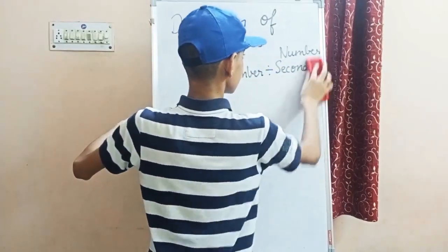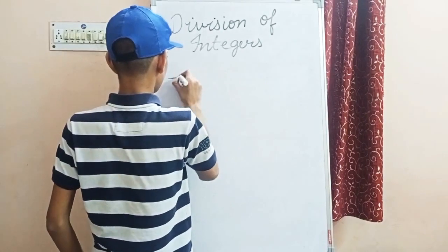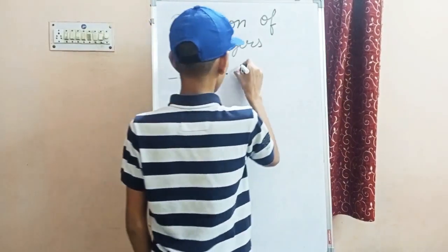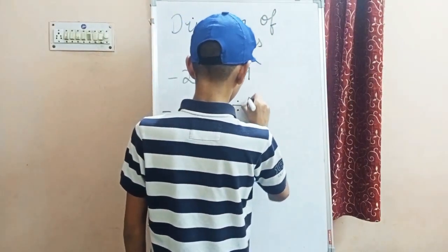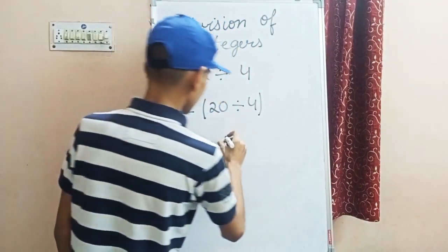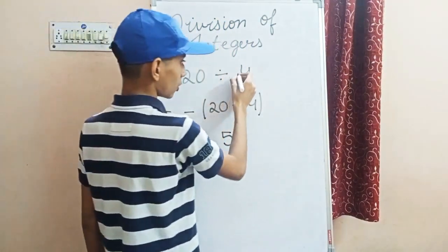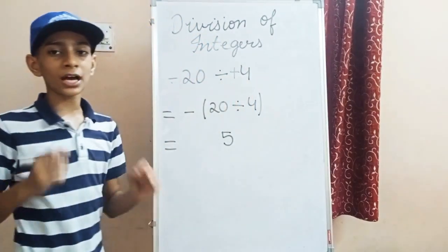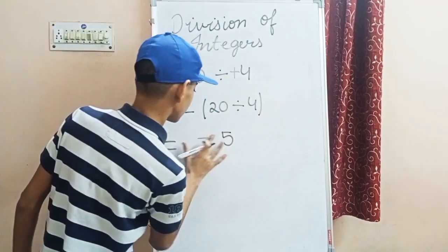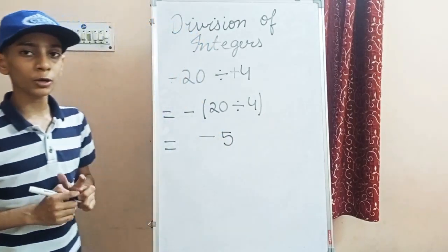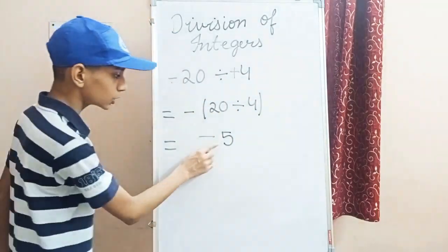Let's take the example: minus 20 divided by 4. We write a minus sign and put 20 divided by 4 in the bracket. 20 divided by 4 gives 5. Since we have a minus sign divided by a plus sign — minus divided by plus equals minus — the answer comes as minus 5.